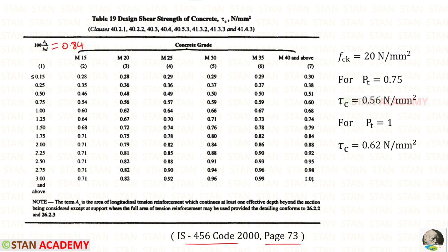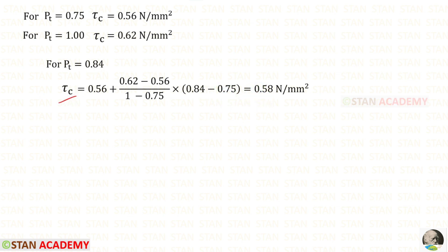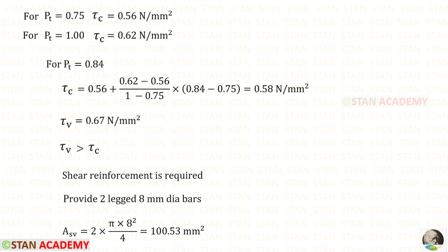Opening page number 73 of the code book, pt = 0.84 falls between 0.75 and 1.0 for fck = 20. We interpolate to find τc: the expression gives τc = (value at 0.75) + (value at 1.0 minus value at 0.75) / (1.0 minus 0.75) × (0.84 minus 0.75), resulting in τc = 0.58 N/mm². Since τv = 0.67 is greater than τc = 0.58, shear reinforcement is required.